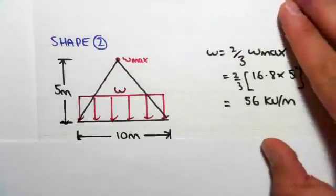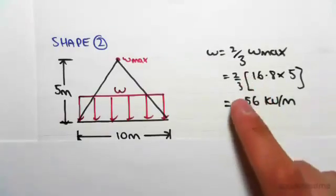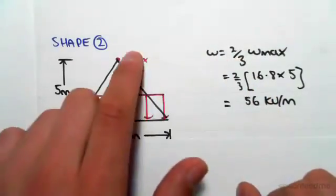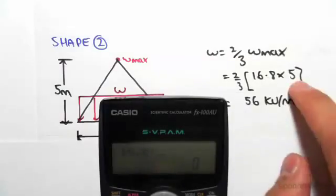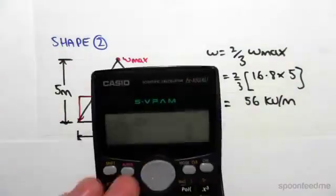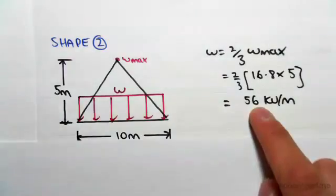The triangle is ten meters by five meters high, so it's the exact same formula as before: two-thirds of W max. What we do is work out the area load to be 16.8 times the height, which is five meters, and we multiply that by two divided by three to give us 56 kilonewtons per meter.